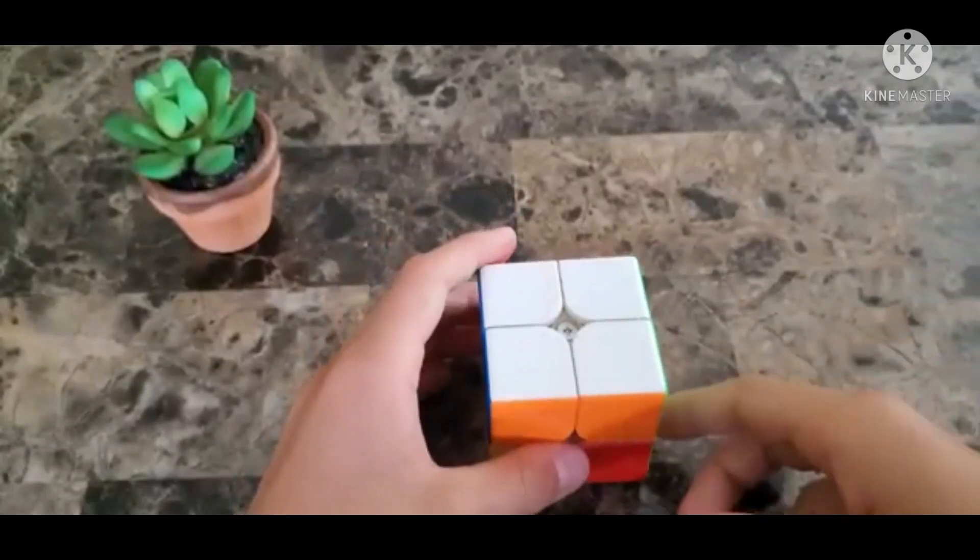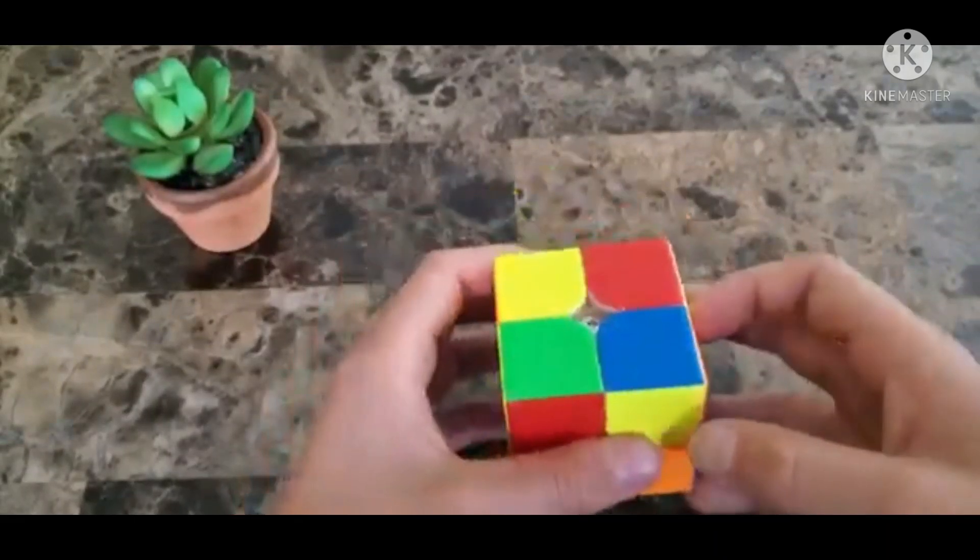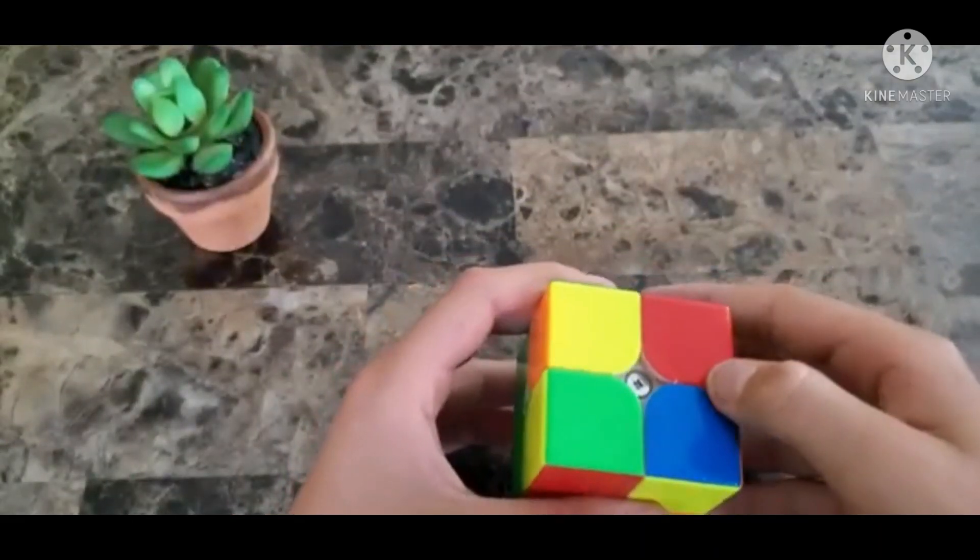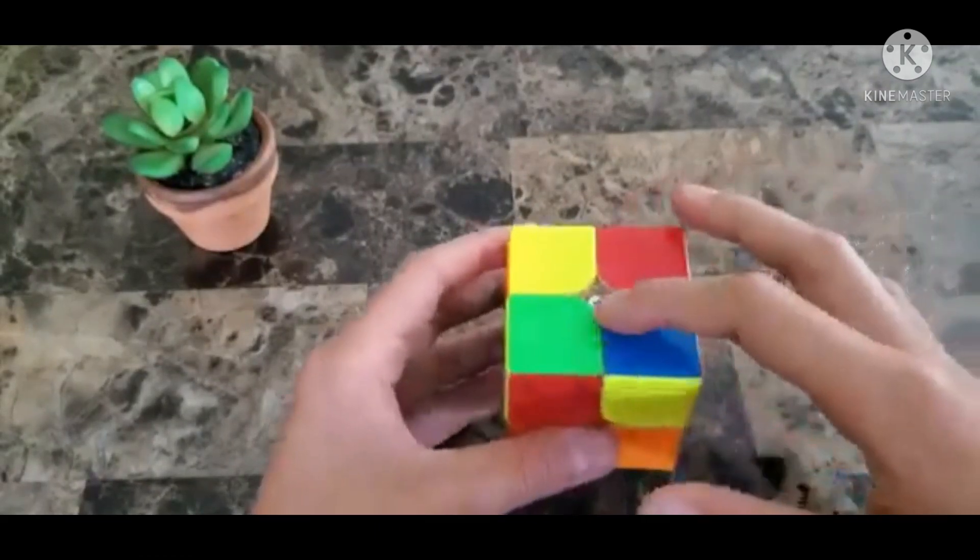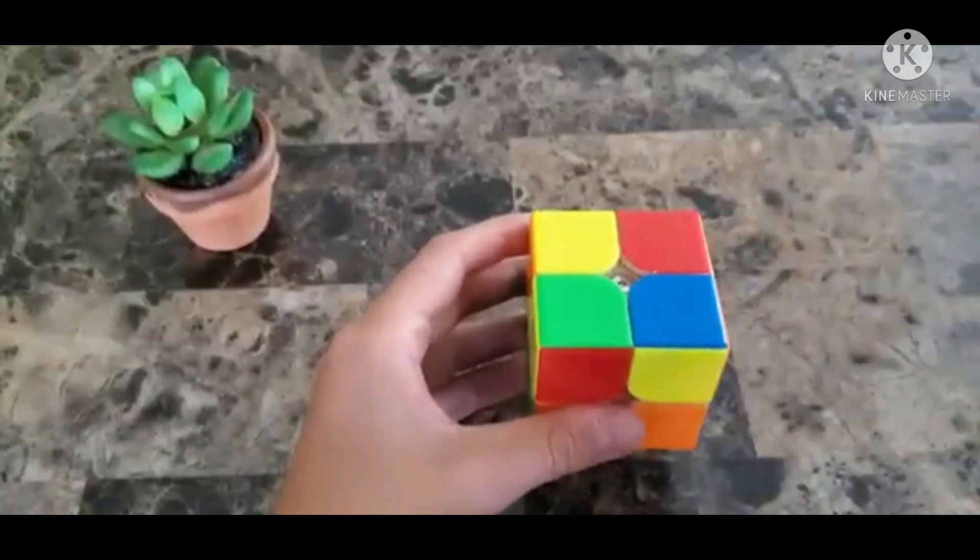Then you're gonna flip the cube over and start with the last layer. Now this step will not complete the whole last layer, this will just be completing the yellow face. So let's just get into it.